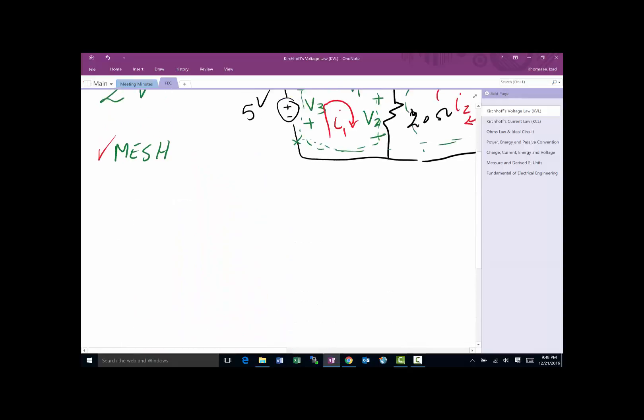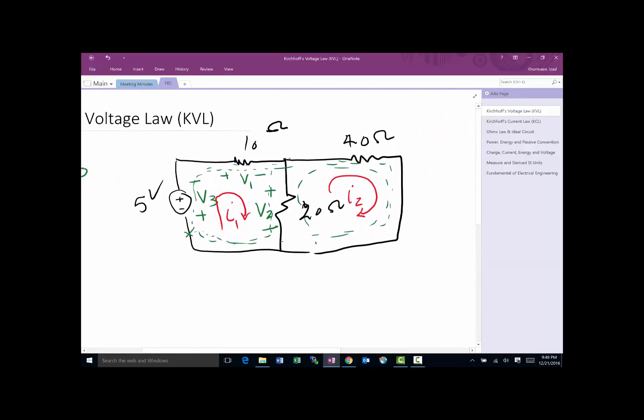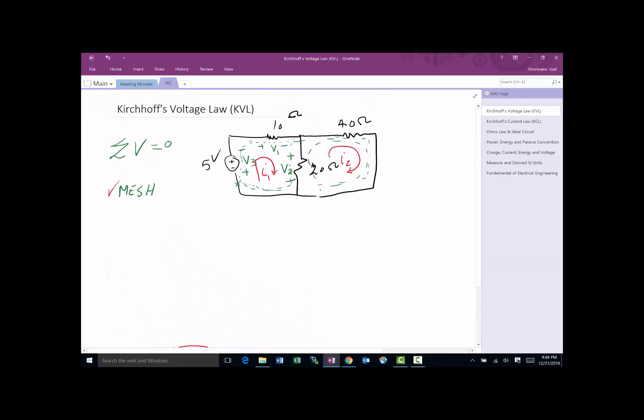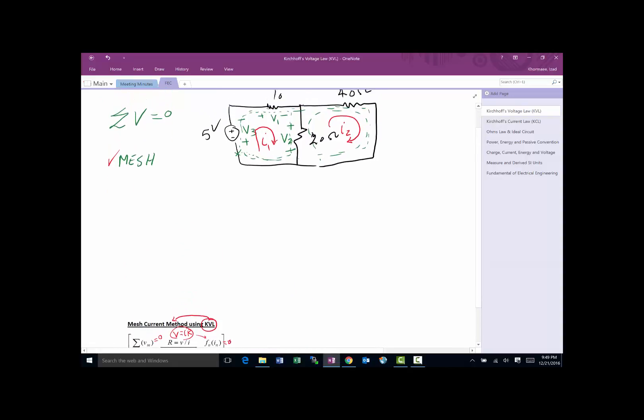Let's say we are trying to find all the currents in the circuit. First step: identify the meshes. We did it—there's two of them. Step two: for every one of those meshes, write the sum of voltages. I'm going to do it step by step for mesh one so we can get used to how it looks. For mesh two, we're going to do it without having to go through every step at a time.